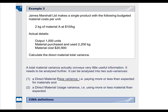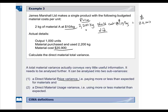In the scenario, materials purchased and used were 2,200 kilograms. For the materials price variance, we say 2,200 kilograms should cost $22,000 at the standard price of $10 per kilogram. The 2,200 kilograms did actually cost $20,900. The actual cost was less than the expected cost, and that difference of $1,100 is a favorable variance. So our materials price variance is $1,100 favorable.